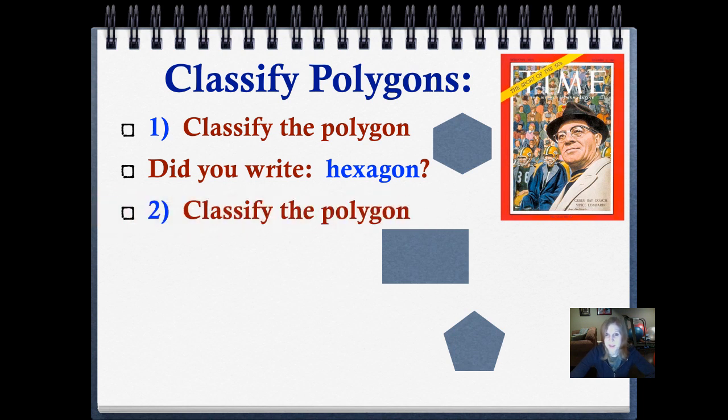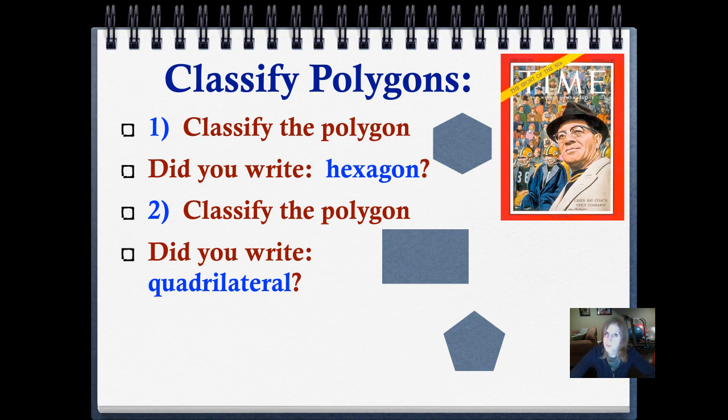Let's try another one. Classify the polygon just underneath the word polygon. Push play when you're ready. Did you write quadrilateral? Yes, I know that's a rectangle. But we were looking for the names of polygons, classifying polygons. So we have a four-sided shape, and that would be a quadrilateral, because quad means four.